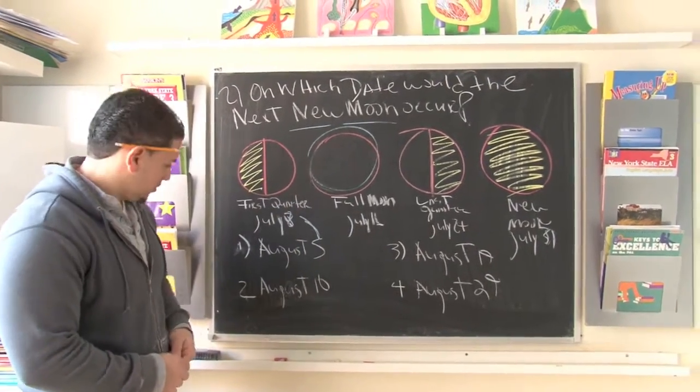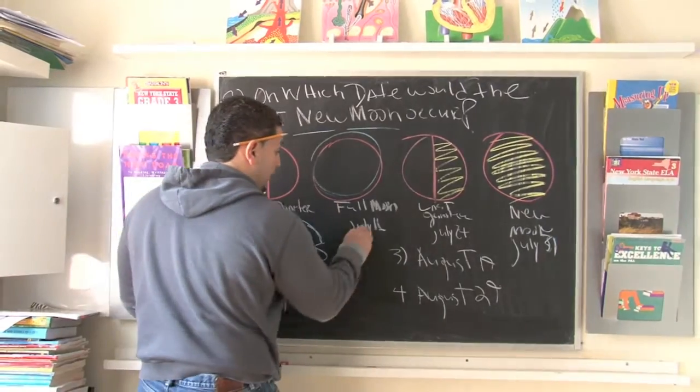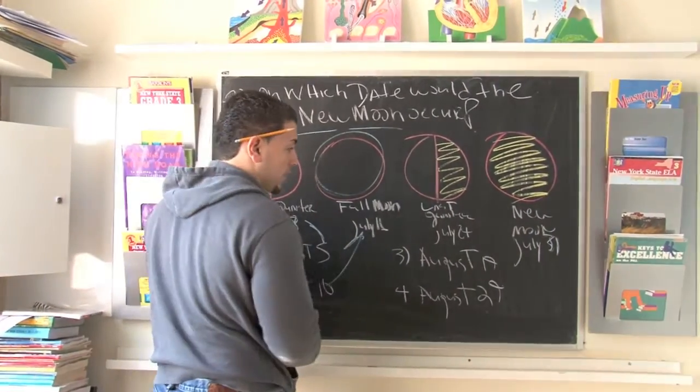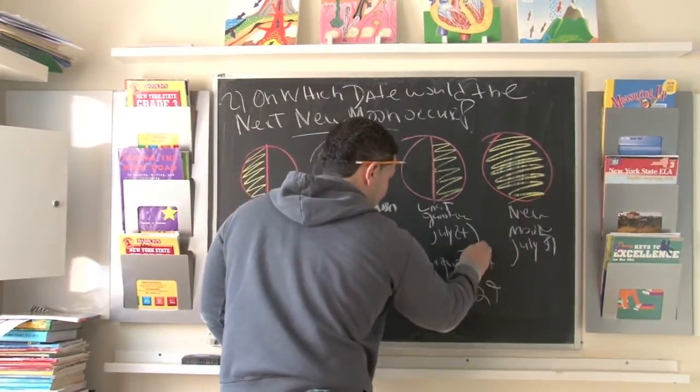What would be the next date? Let's look at the choices. Well, August 10th would correspond to a full moon. And then finally, the last quarter is July 24th here, but it would correspond to August 19th here.